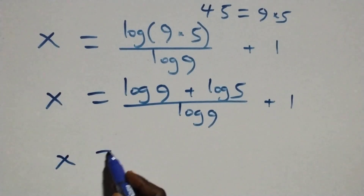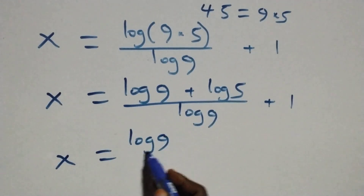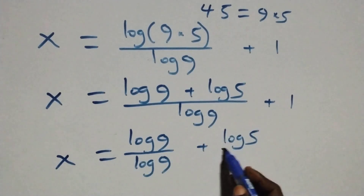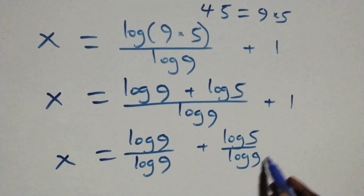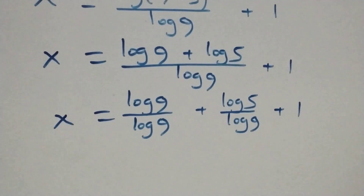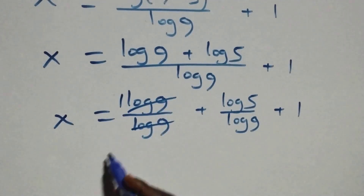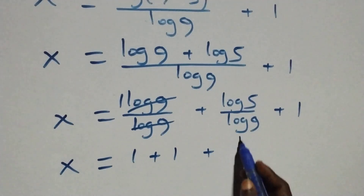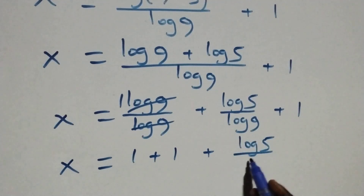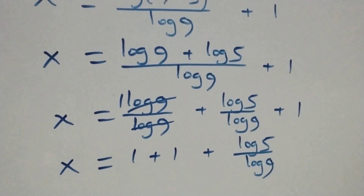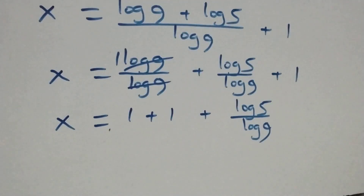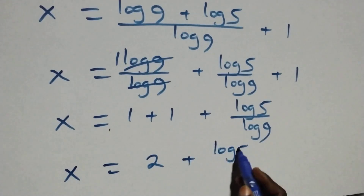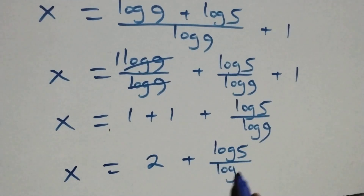We separate this into two fractions: x equals log 9 over log 9 plus log 5 over log 9 plus 1. Then log 9 over log 9 gives 1, so x equals 1 plus log 5 over log 9 plus 1, which is x equals 2 plus log 5 over log 9.